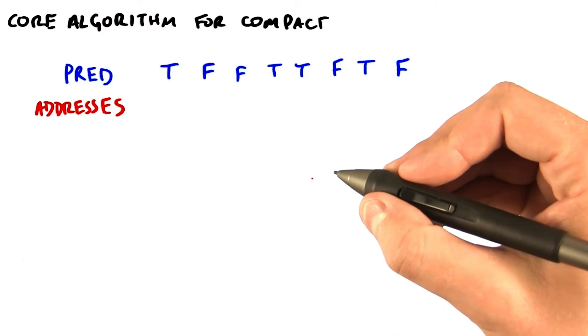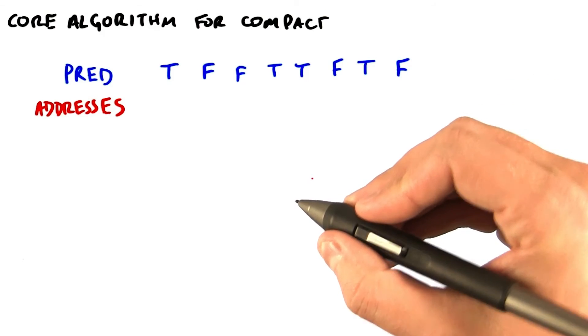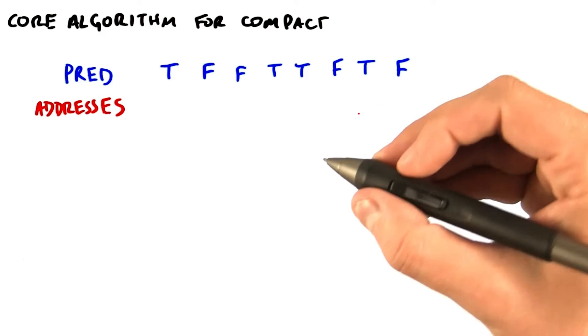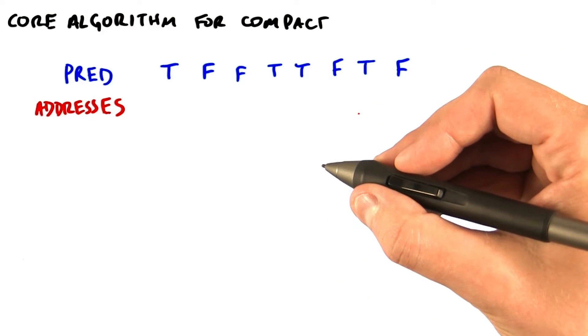So now we know how to compact in parallel, but only if we figure out how to compute the scatter addresses efficiently and in parallel. So let's take a closer look at the computation that we need to do here.